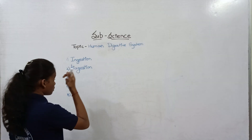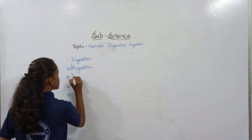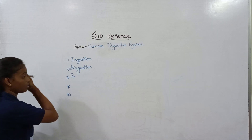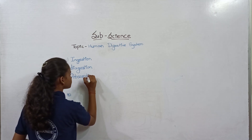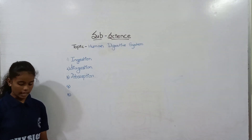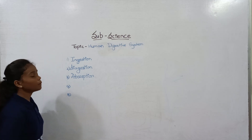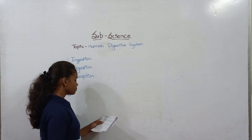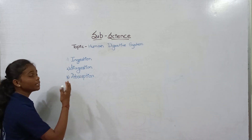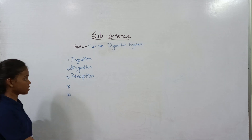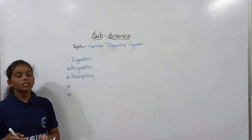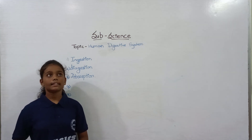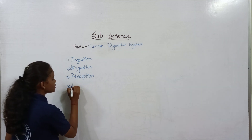Then after digestion, the absorption process occurs. In absorption, digested food goes into the blood vessels. Digested food entering the blood vessels is called absorption. Then this food goes into certain cells where it is used, which is called assimilation.